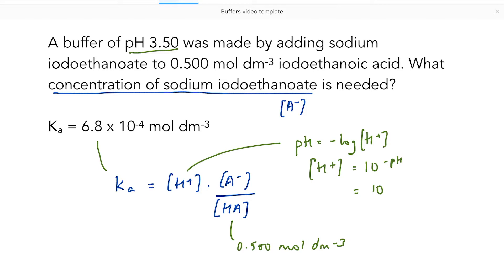So that's 10 to the minus 3.5, which comes out at 3.162 times 10 to the minus 4 mol per decimetre cubed.